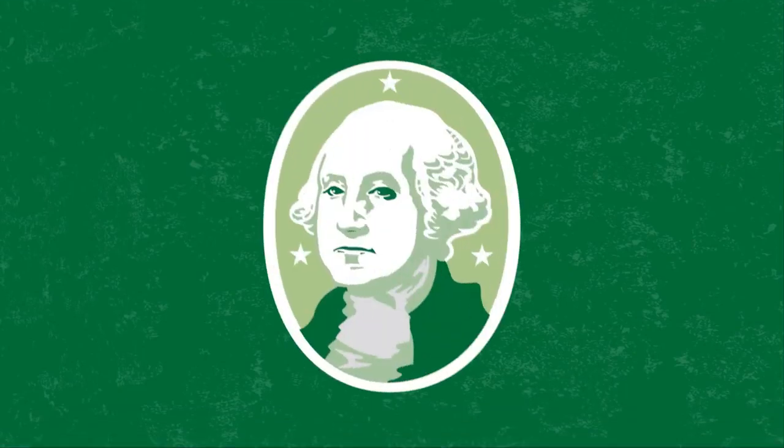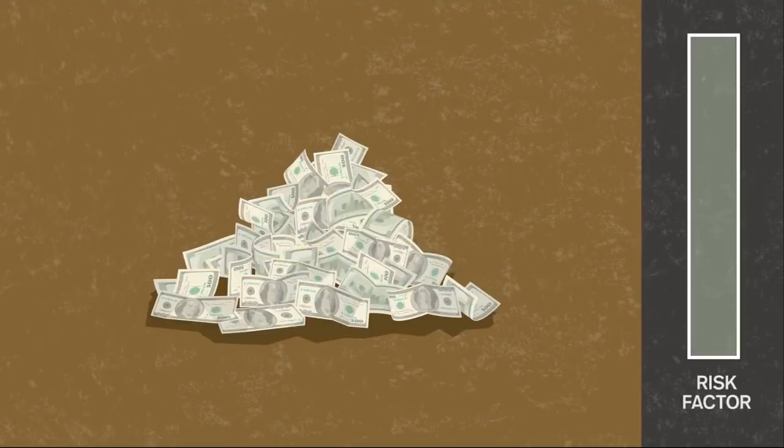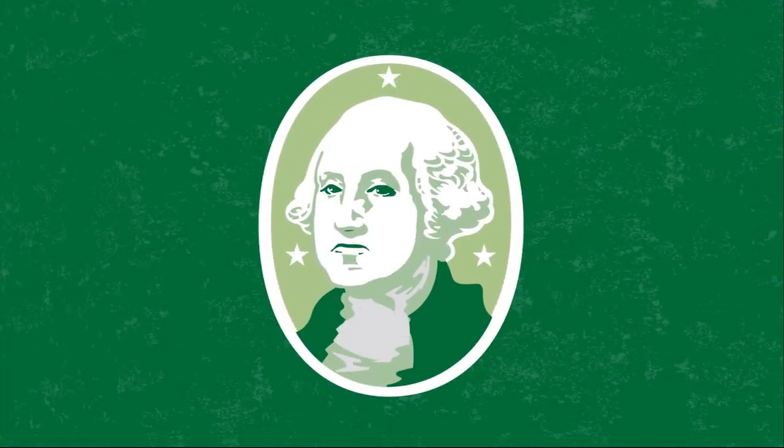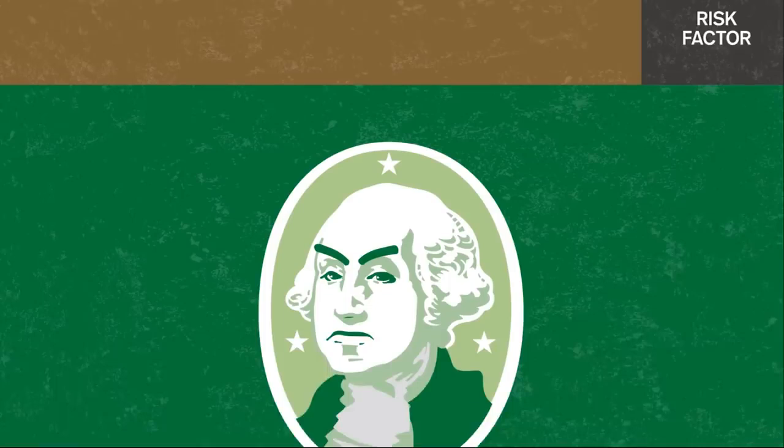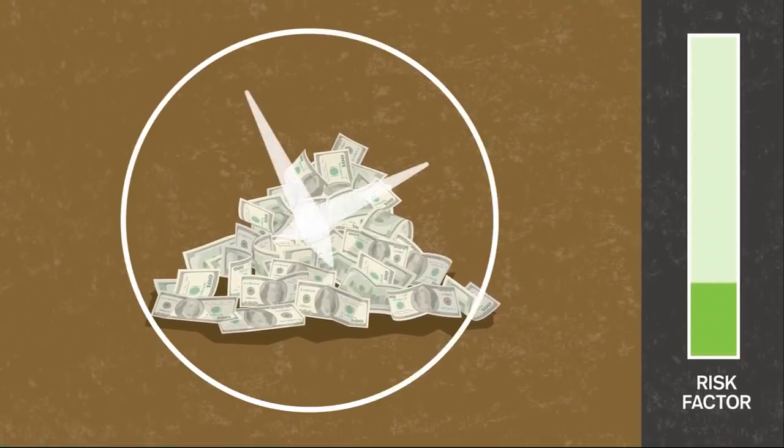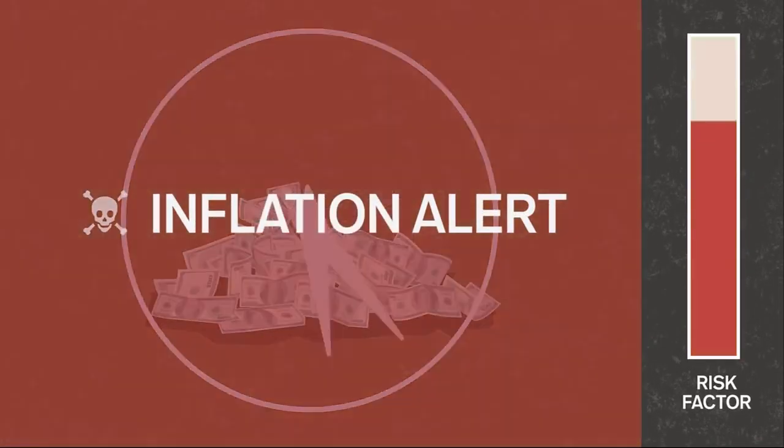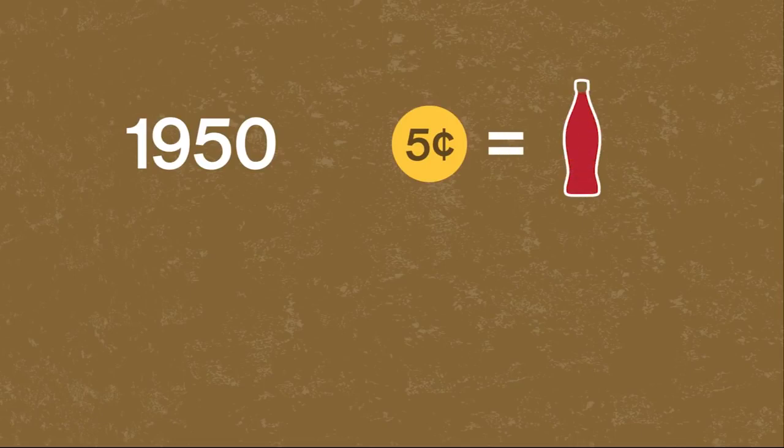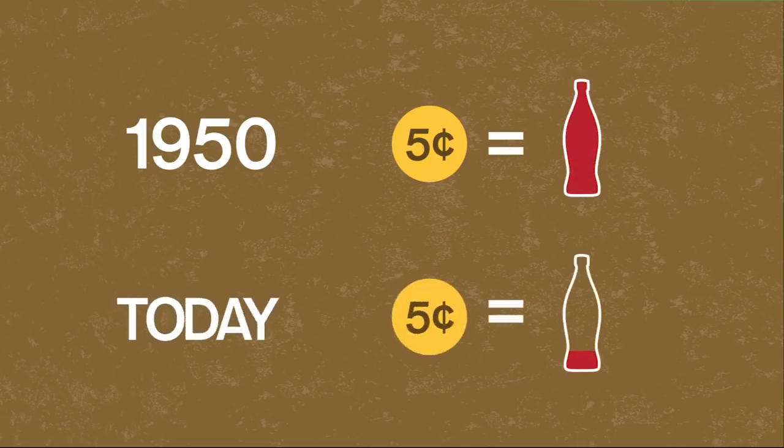Cash is, well, cash. In a 401k, it's usually available as a money market or stable value fund. Unlike other assets, there's little risk that your money will lose value. But that doesn't mean there's no risk at all. If you hold too much cash, you are at risk that inflation will leave your money worth less compared to everything else. For example, in 1950, a nickel would buy you a Coke. But if you saved that nickel until today, you wouldn't have enough to buy that same Coke. Cash loses value over time.